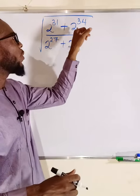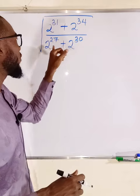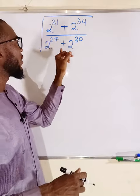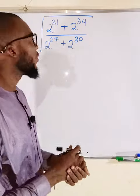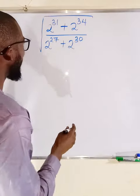We have the square root of 2 to the power of 31 plus 2 to the power of 34 divided by 2 to the power of 27 plus 2 to the power of 30. You can see all the bases are the same, 2. Alright, let us start by factorization.